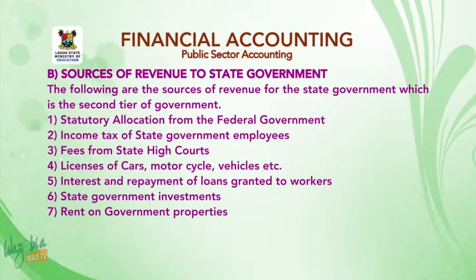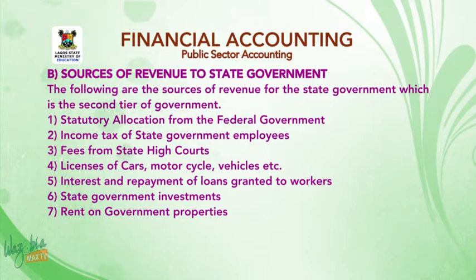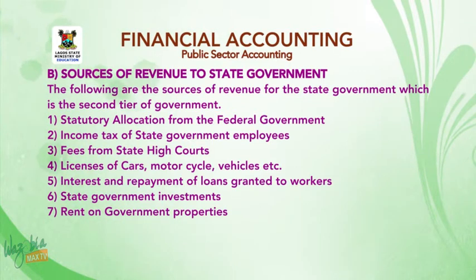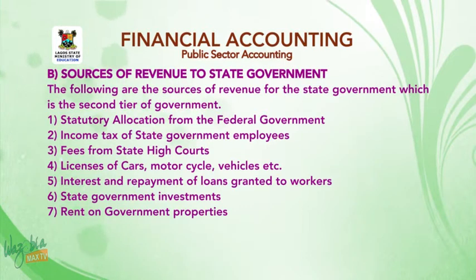B, sources of revenue to state government — the second tier of government: one, statutory allocation from the federal government; two, income tax of state government employees; three, fees from state quotas; four, licenses for cash, motor vehicles, cycles, etc.; five, interest and repayment of loans granted to workers; six, state government investments; seven, rent on government properties.